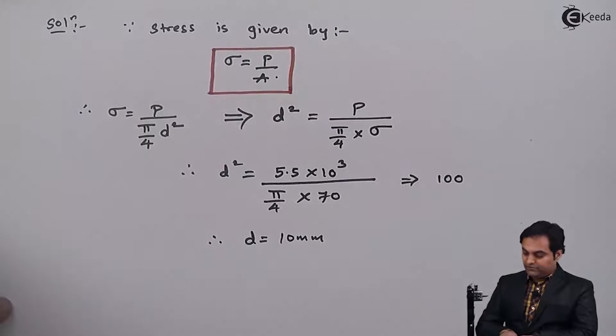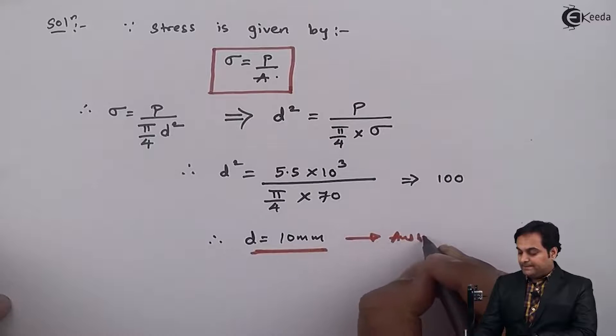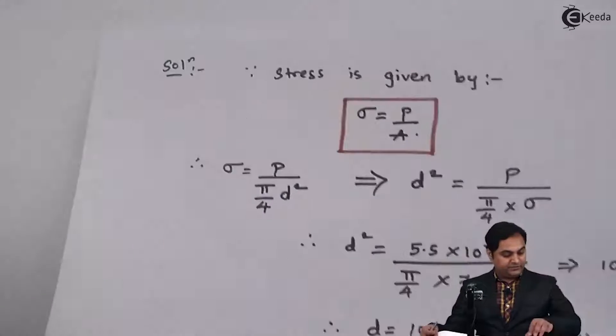So here is the first answer. We have calculated how much should be the diameter of the copper wire. Now after getting this diameter, the next question is to calculate elongation.